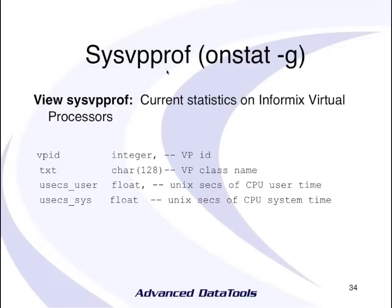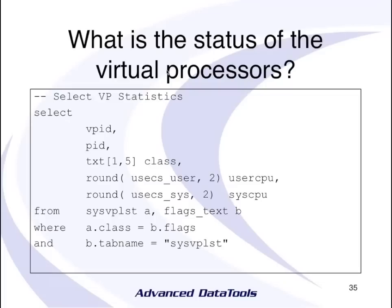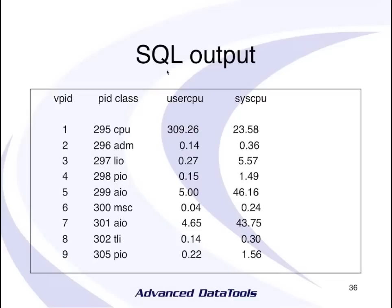SysVPProf has your virtual processor information — these are the onanets. It tells you the VP class (created from the flags table) and how much Unix user and CPU time each onanet has taken up. Here's a script to get stats about your onanets. Sometimes when performance tuning, the goal is not to make it faster but to make it more friendly — reducing CPU usage of the onanets makes your system more responsive to other things running on it.